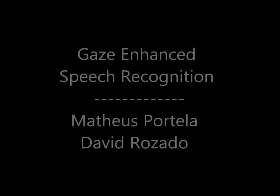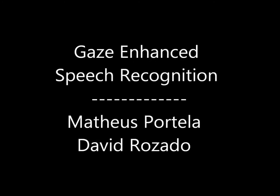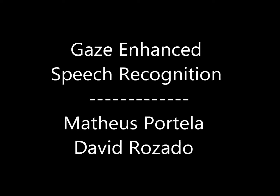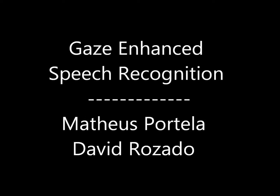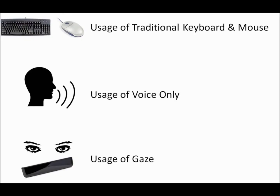In this video, we compare three modalities of correcting misrecognized words during a speech recognition task. These three modalities are using keyboard and mouse, using voice only, and using gaze.